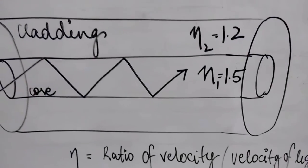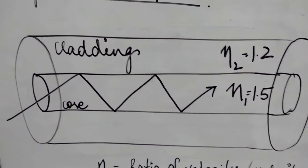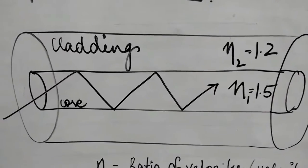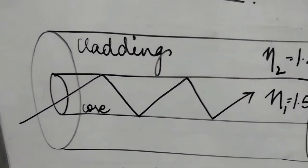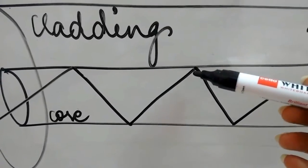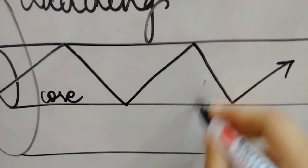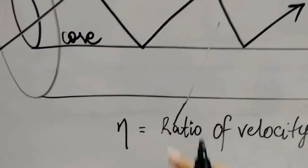So what happens if there is a difference between the refractive indexes between the core and the cladding? As the wave propagates through the core, as it reaches to the boundary, it forms sharp bends.